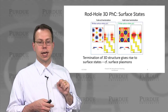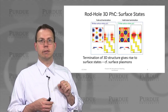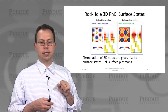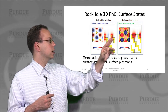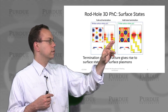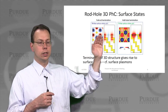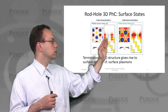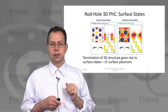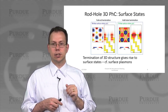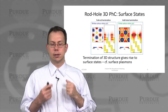The surface states that are created are very interesting as well — this has been a big topic of research in the photonics community. These surface states are very sensitive to the exact point at which you terminate the overall structure, giving different types of modes in those two cases. These are both very analogous to surface plasmon states. In the next lecture we'll talk about how to calculate all of this stuff in more detail. Thank you.